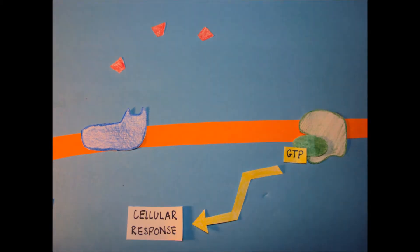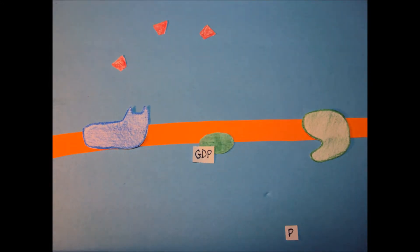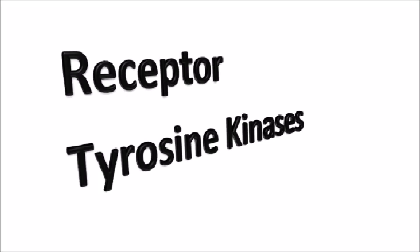This triggers the next step for the cellular response. Finally, the G protein hydrolyzes the bond in GTP, returning it to GDP. The G protein leaves the enzyme, going back to its inactive state. A receptor tyrosine kinase can trigger more than one response at a time.